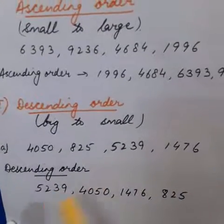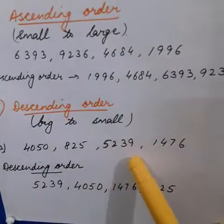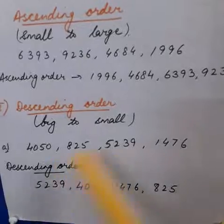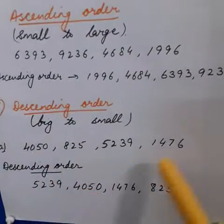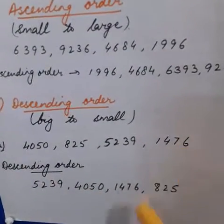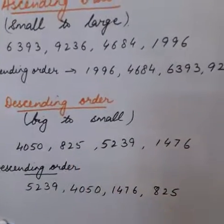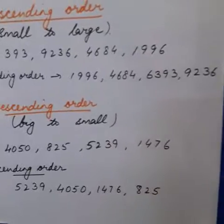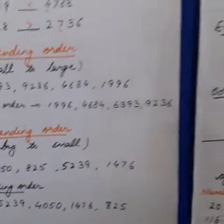Descending order means largest first. So this is the largest: 5239. Then 4050, then 1476, then 825. So we have arranged the numbers according to the descending order.